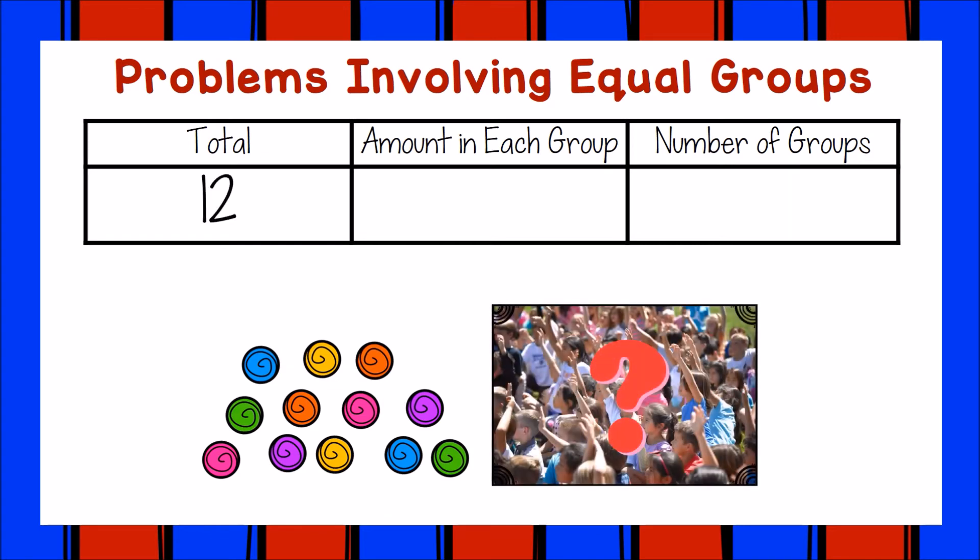Again, we know the total amount of candy is twelve. This time we know the amount in each group because she wants to give three candies to each person she sees. We just don't know the number of groups she can make or the number of times she can take three away from her whole amount of candies. When we know the total amount and we know the amount in each group we can keep taking away that amount or repeatedly subtract that amount to see how many times we can take it away or how many groups we can make.